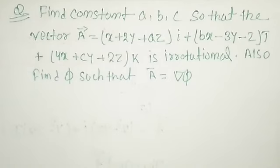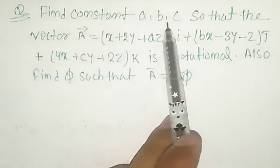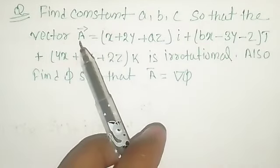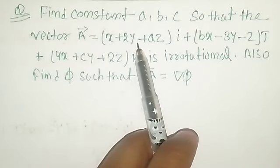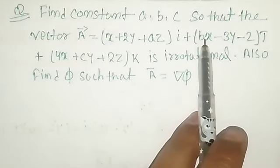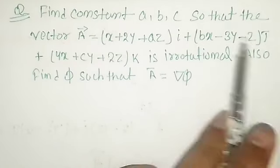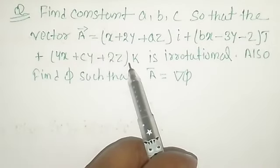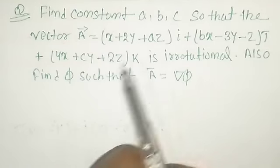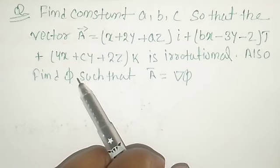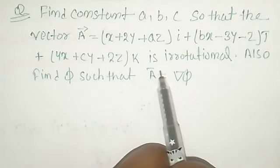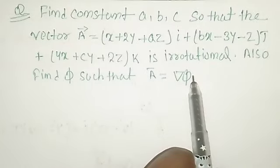Hello, I welcome you all to your own channel MSQ Learn. Now we will solve one problem based on vector calculus. The problem on the screen: find the constant a, b, c so that the vector A = (x + 2y + az)i + (bx − 3y − z)j + (4x + cy + 2z)k is irrotational. Also find the scalar point function φ such that vector A equals the gradient of φ.